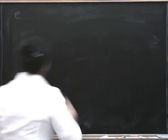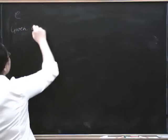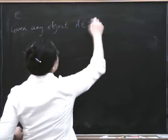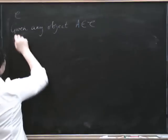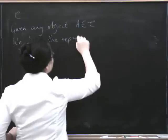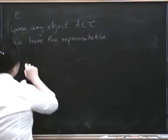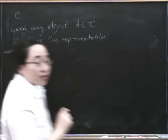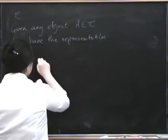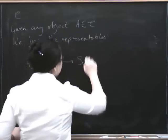Given any object A in C, we have the representable functors. They're usually notated with an H, and there's a difficulty getting your upper and lower script right. Lower script A, subscript A, usually means that this is a contravariant functor. So it's going to go from C op to Set.